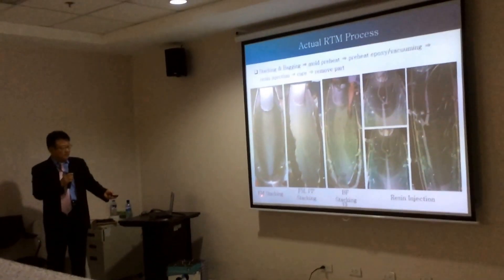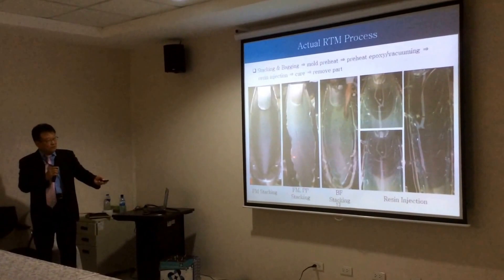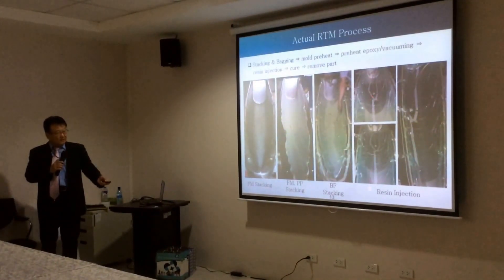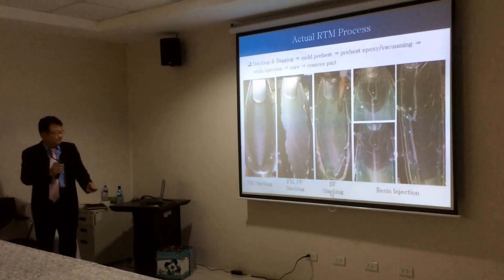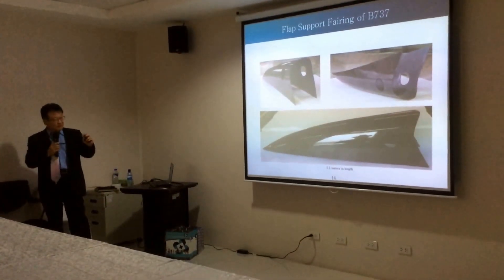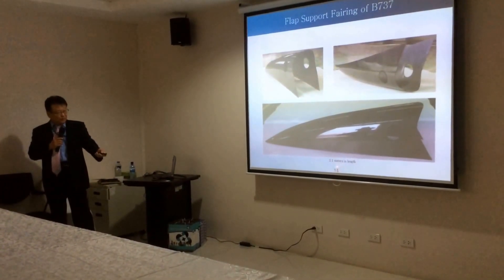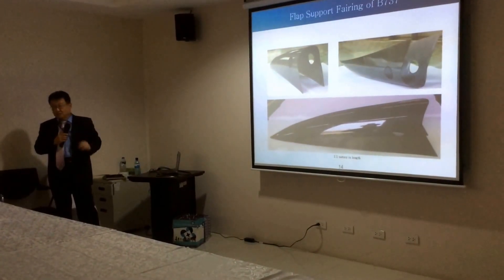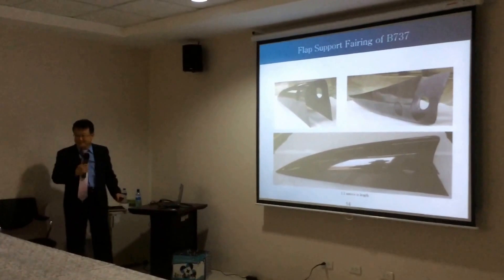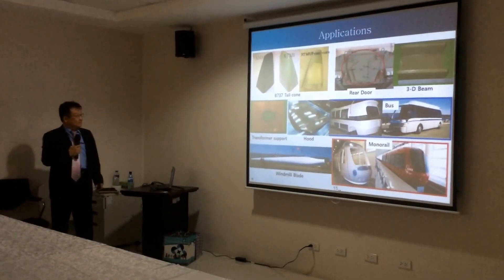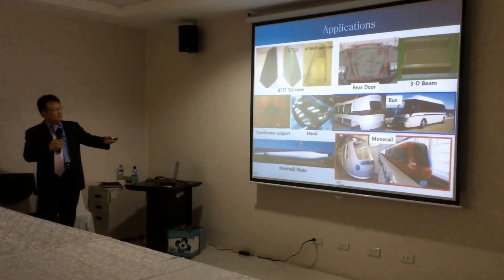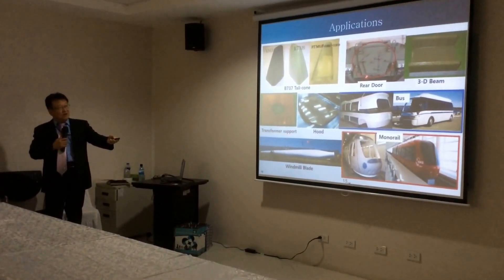First we stack the film materials, put polypropylene on top, then apply the bagging film, then do resin injection. We end up with a part about 2.1 meters in length and about 1 millimeter in thickness — and Marisa can pick it up with one finger.